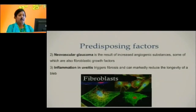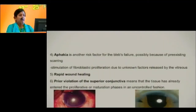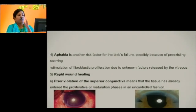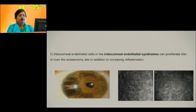In patients with uveitis, excessive fibrosis can be triggered, reducing the longevity of the bleb. In aphakic patients, there is risk of bleb failure because of pre-existing scarring and fibroblastic proliferation due to unknown factors released by the vitreous. In certain patients, aggressive wound healing can lead to bleb failure, and prior violation of superior conjunctiva means tissue has already entered the proliferative or maturation phases in an uncontrolled fashion. In iridocorneal endothelial syndrome, ICE cells can proliferate over the sclerectomy site, increasing inflammation.